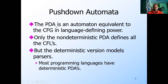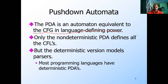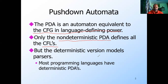The pushdown automata is a machine which accepts the context free grammars, which defines the power of CFG. Context free grammar has the same power that is accepted with the pushdown automata. All the context free languages are to be accepted with the non-deterministic pushdown automata. There are two types of pushdown automata: deterministic pushdown automata and non-deterministic pushdown automata.